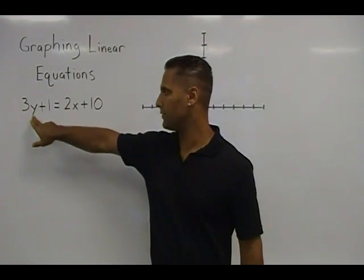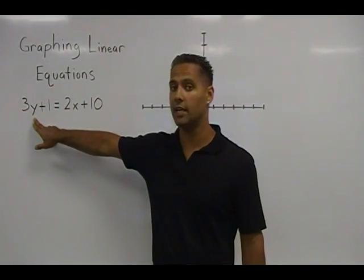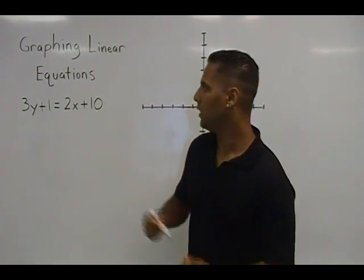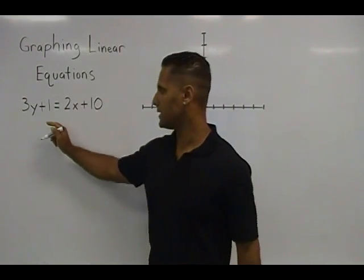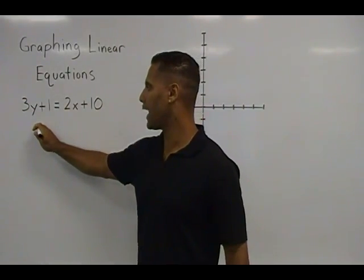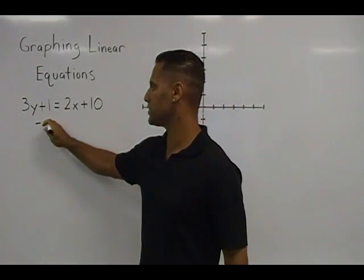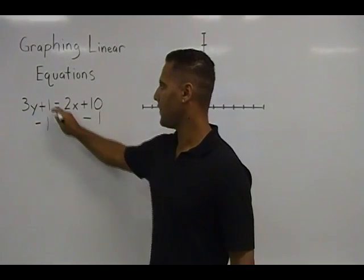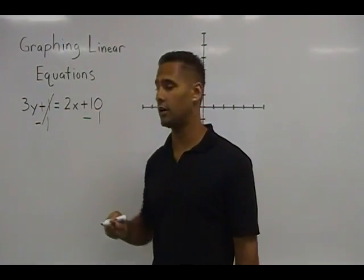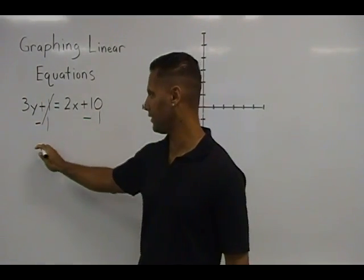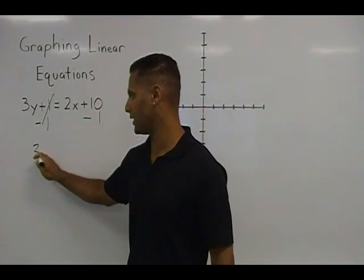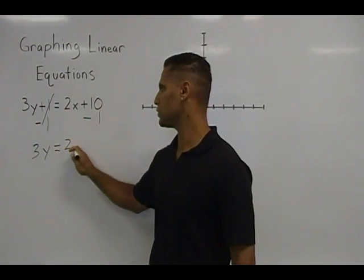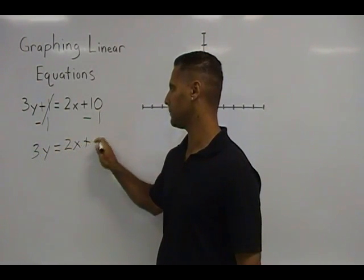We have to isolate the y variable to get it into y equals mx plus b form. So let's start by taking this positive 1 and doing the opposite, which is to subtract 1 on both sides. That will cancel it on the left hand side of our equation, leaving us with 3 times y is equal to 2x plus 9.